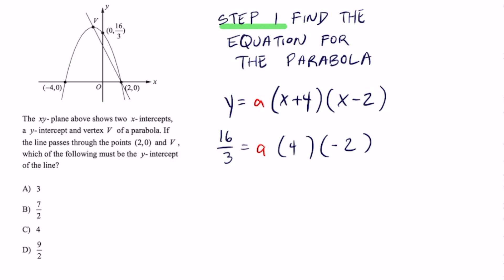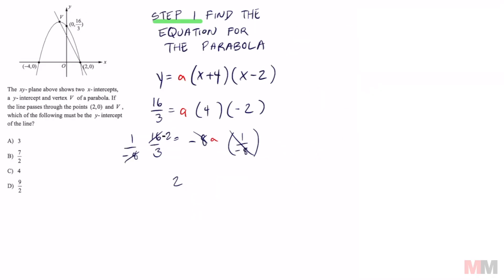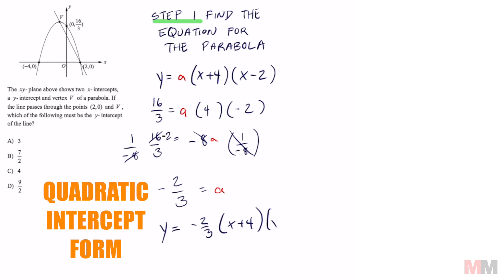Simplifying that further, we get negative 8a equals 16 over 3. You can just multiply by negative 1/8 on both sides. I like doing it that way because it makes this easier to calculate without a calculator. 16 over negative 8 is negative 2, then you multiply across. That's going to be negative 2/3 equals a. Now we can write the equation for that parabola: y equals negative 2/3 times x plus 4 times x minus 2.